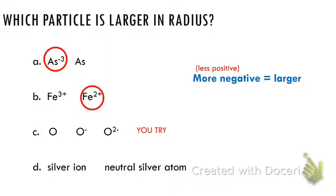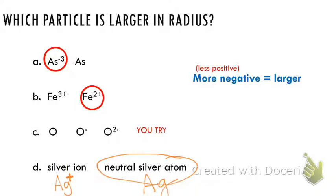I'll have you try the next one, and I want to talk about this silver problem. It doesn't tell you what the charge is, and silver is a transition metal, so you can't predict the charge. How are we supposed to answer this? Silver is a transition metal, and like we said, metals tend to form cations — they tend to form positive ions. So even though you're not quite sure how positive it should be, because silver is a metal you know it will be positive. That means it's lost electrons, and a neutral plain silver atom would be larger.